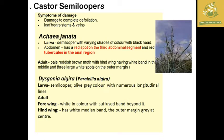There are two semi-loopers on castor: Acchia Janata and Dyskonia algera. The symptoms of damage include complete defoliation — they eat the leaves leaving only stems and veins. This is a major symptom of Acchia Janata. The larvae have red spots. The adult has pale reddish-brown hindwings with a white band in the middle and three large spots on the outer margin.